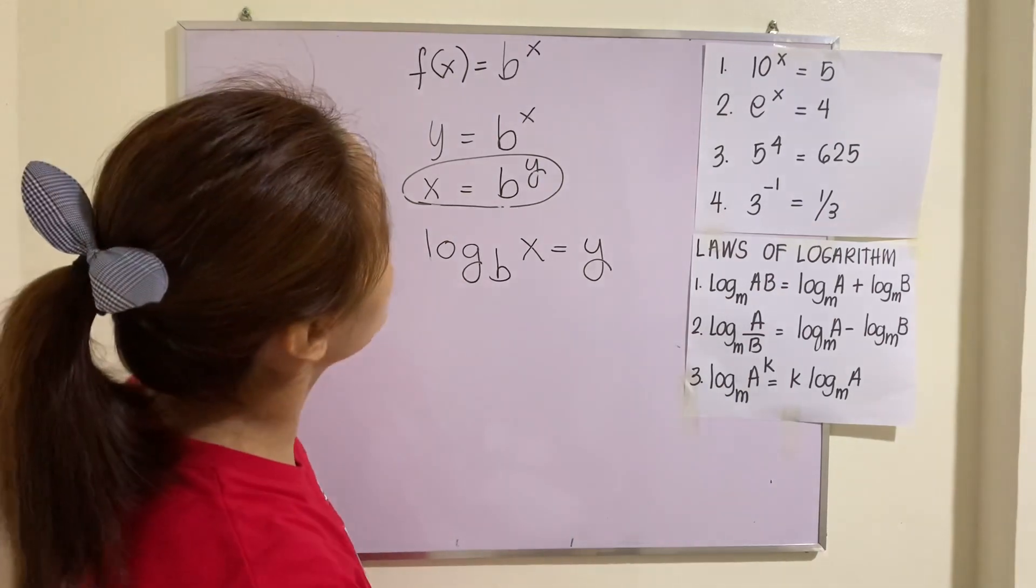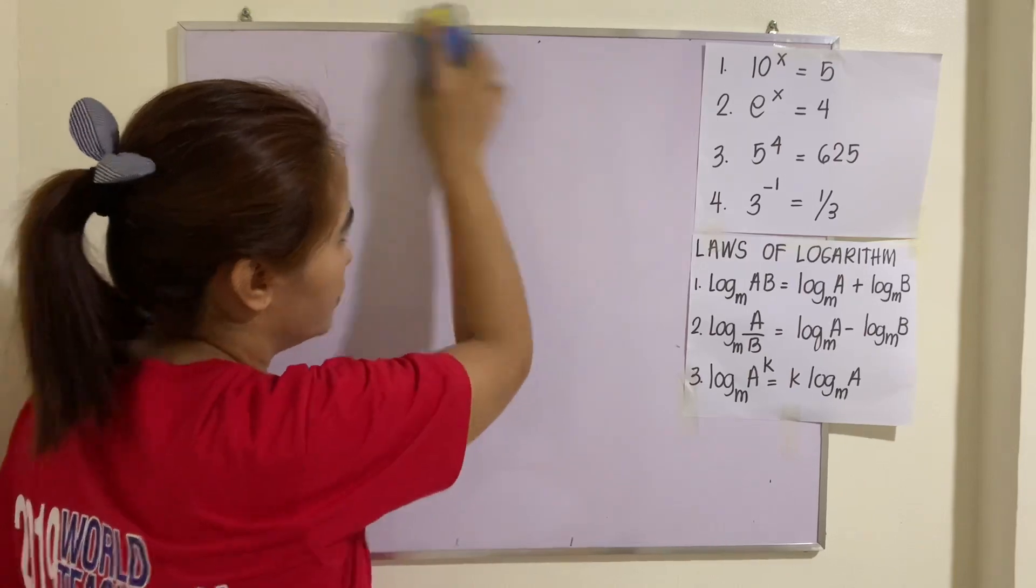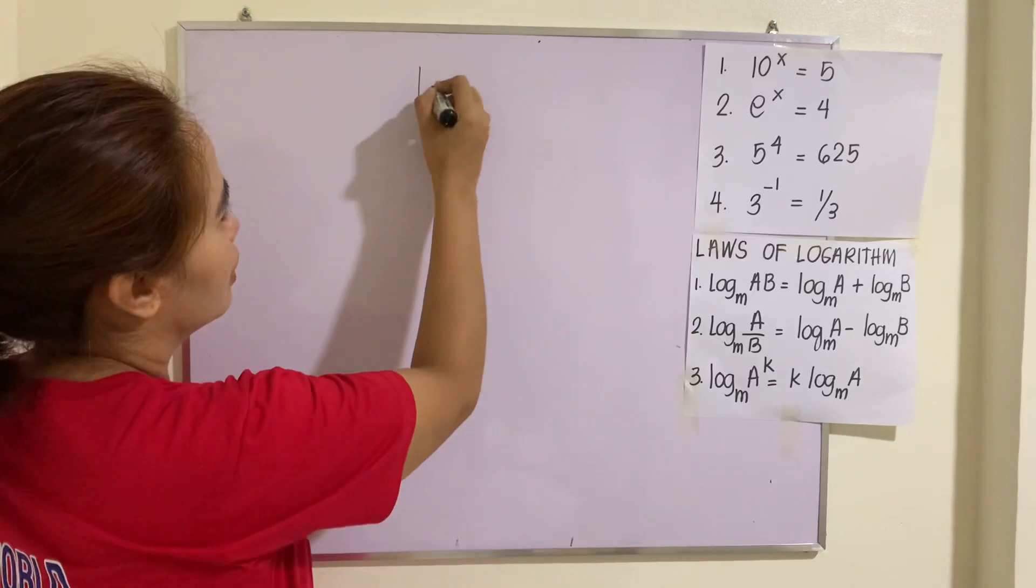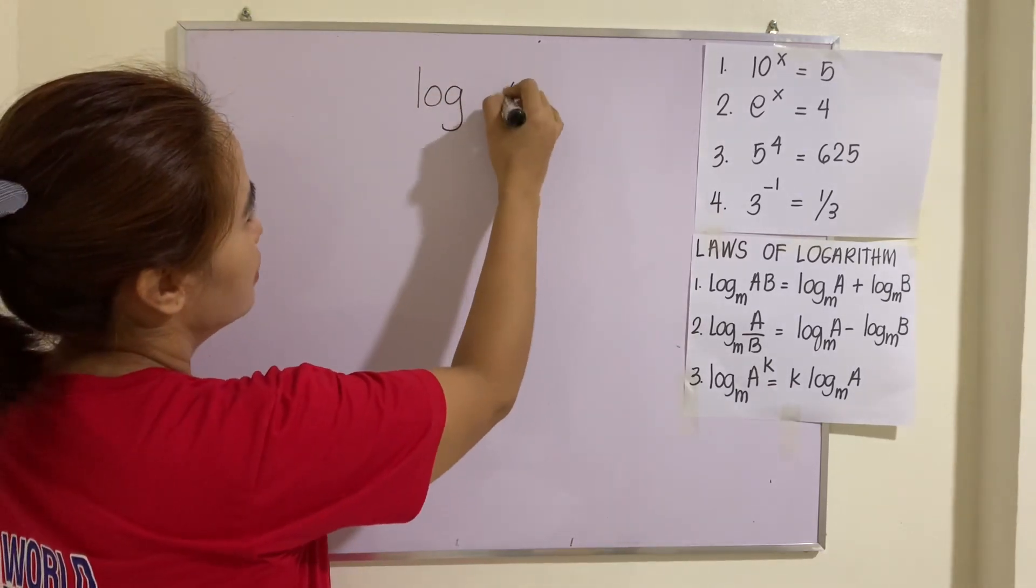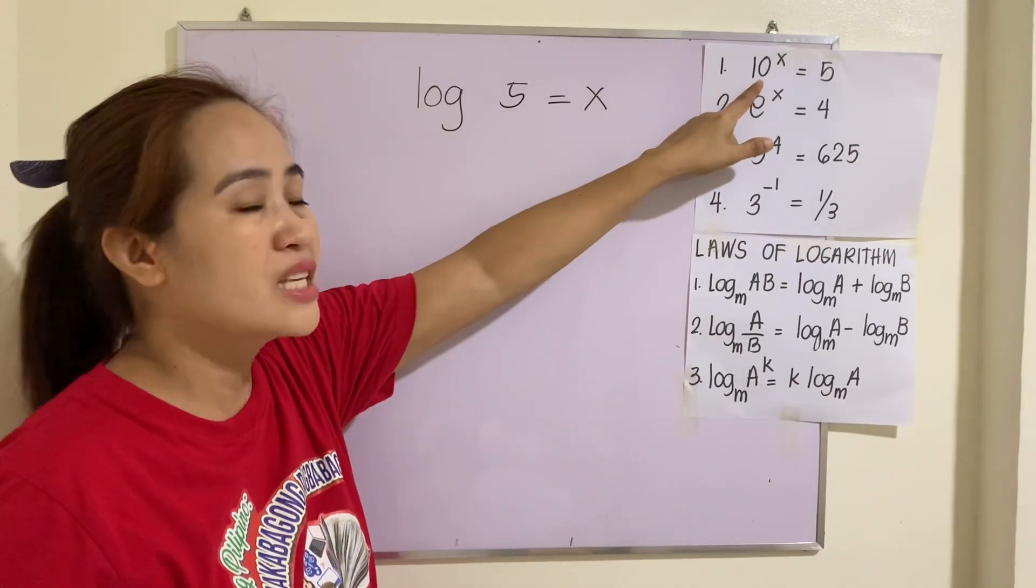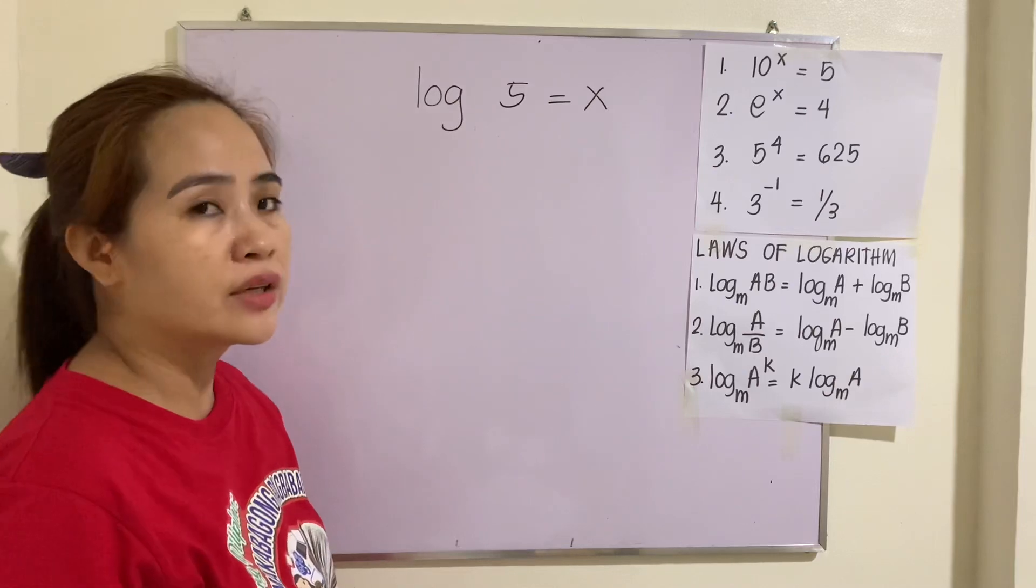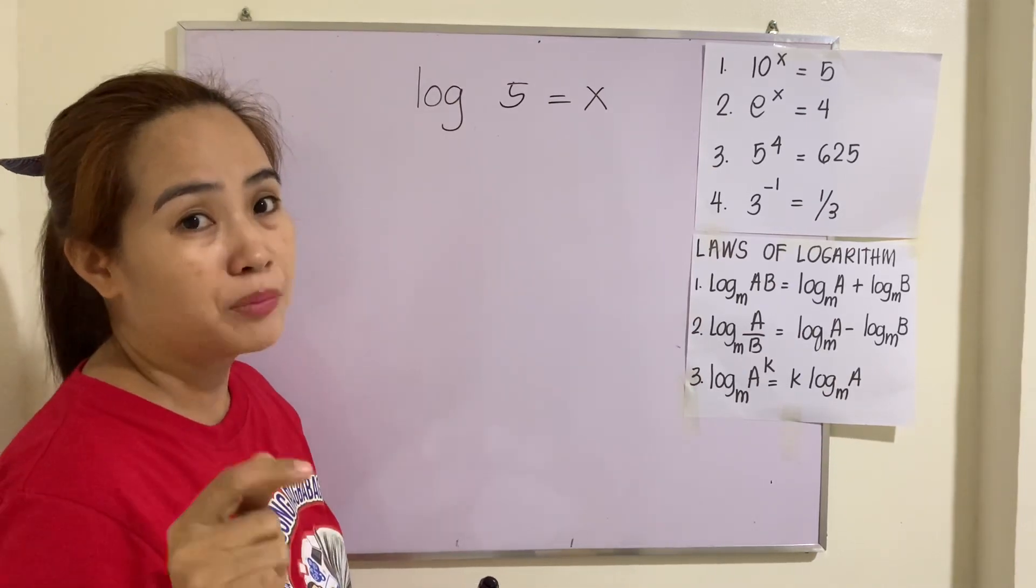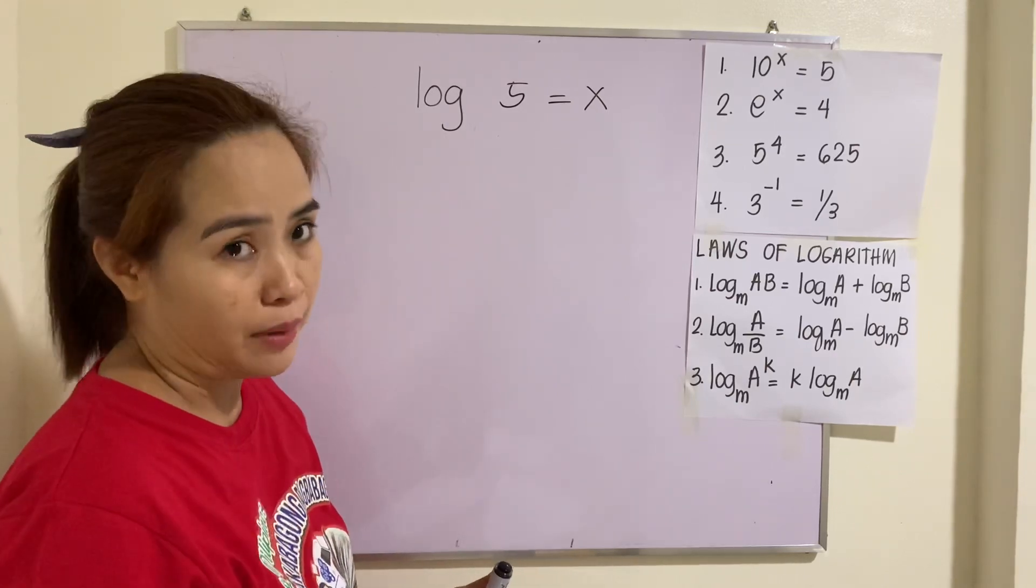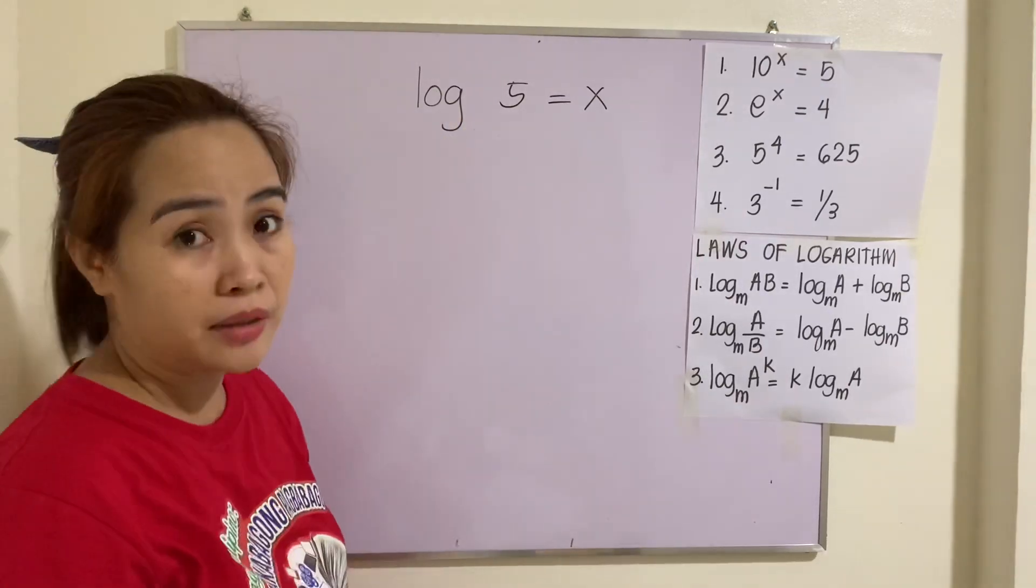Let's try to translate this into logarithms. That will be 10^x = 5. That will be log 5 = x. Notice that I did not put the base 10 there. Why? Because if you saw a logarithm like this, it is understood that the base is 10. And we call that as common logarithm. So, the 10 here is imaginary.